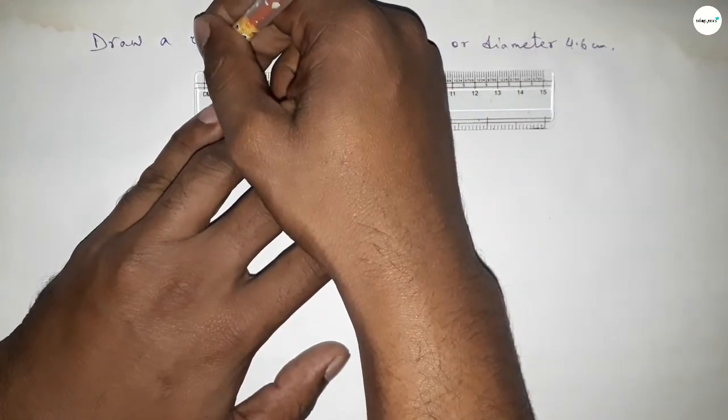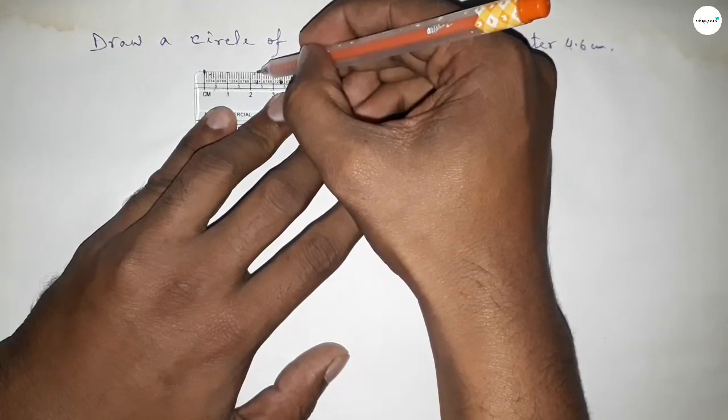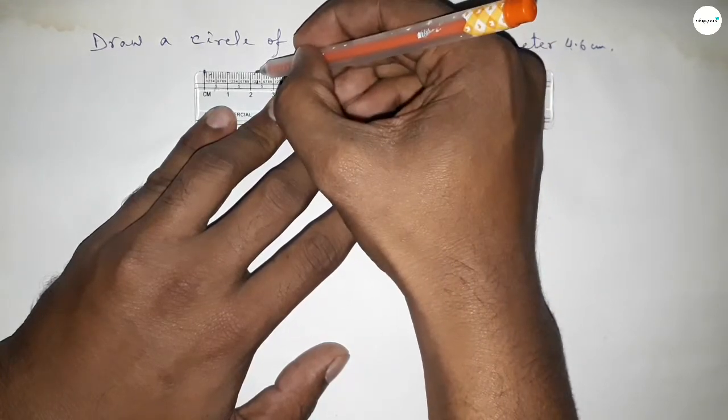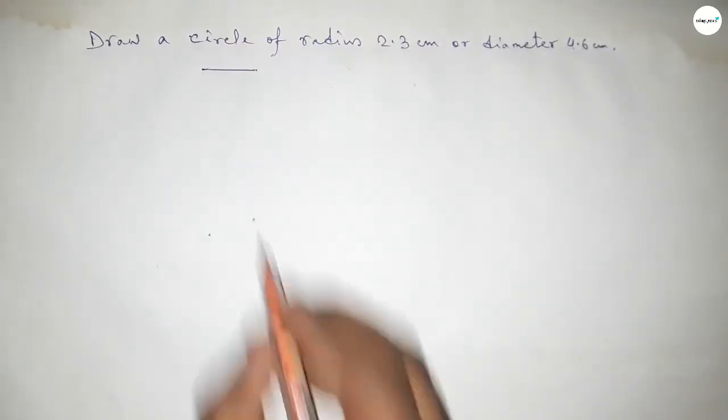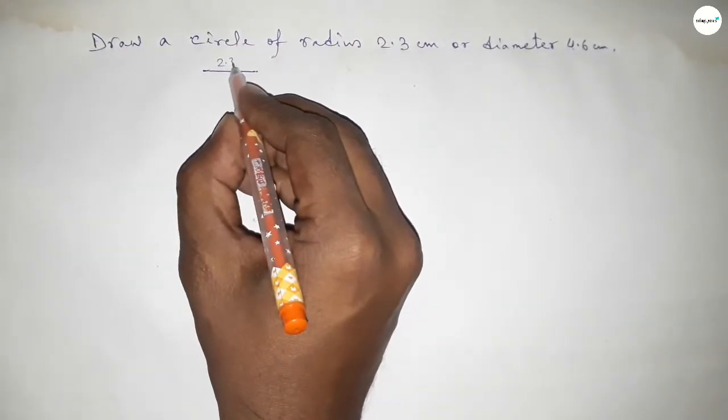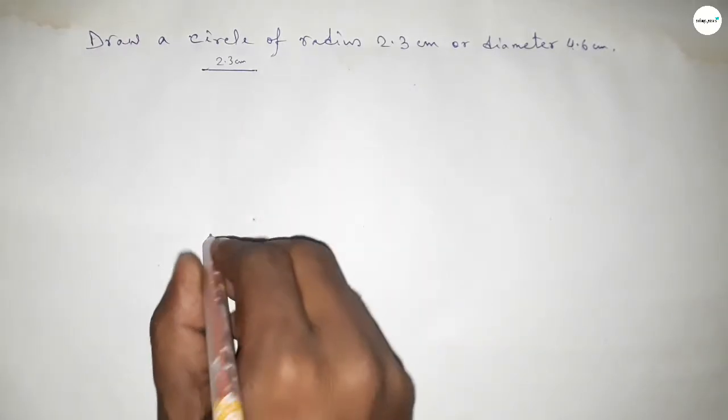So this is starting 0, 1, 2, and this is 2.1, 2.3. So this is 2.3. We know that radius of a circle is half of diameter, so this is 2.3 centimeter.